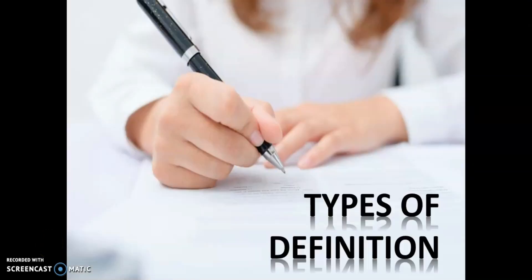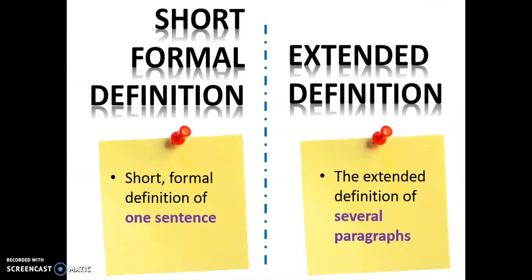Moving on to types of definition. There are two types of definition. The first one, short formal definition, in which it consists of one sentence. And the second one, extended definition, in which it consists of several paragraphs when you want to define the word or the terminology.